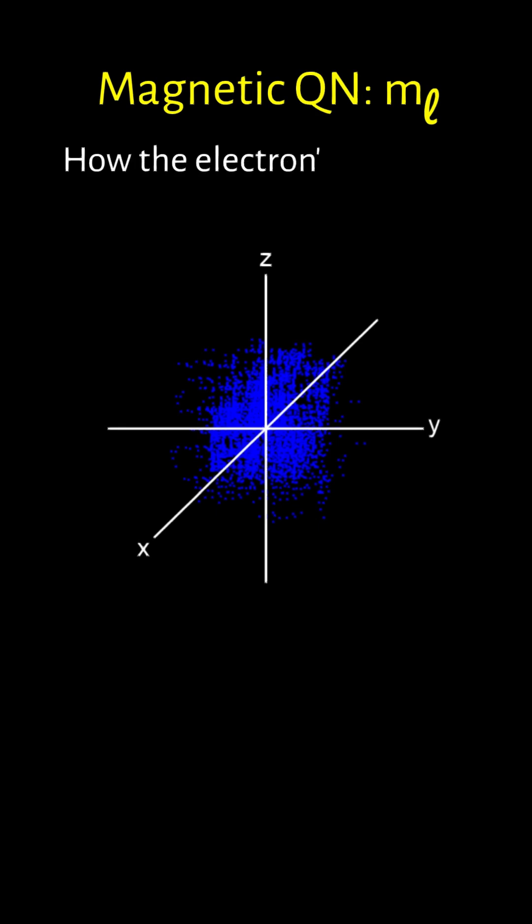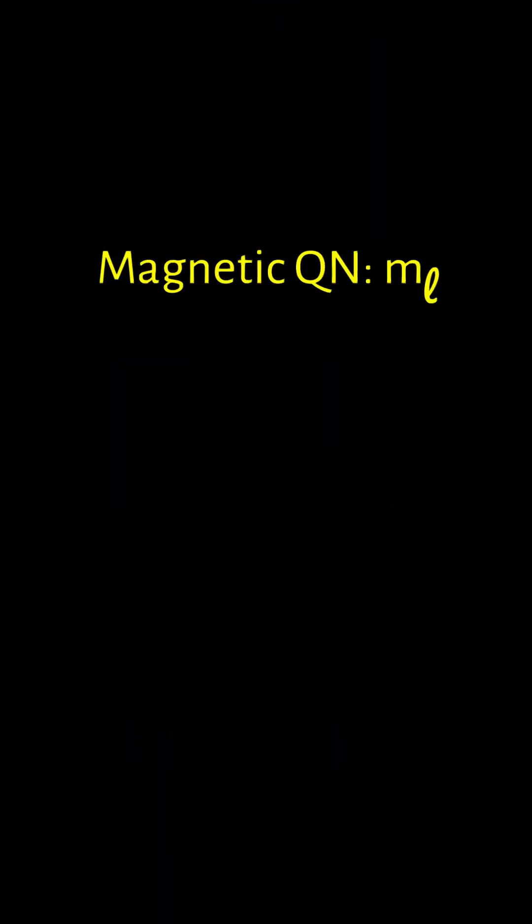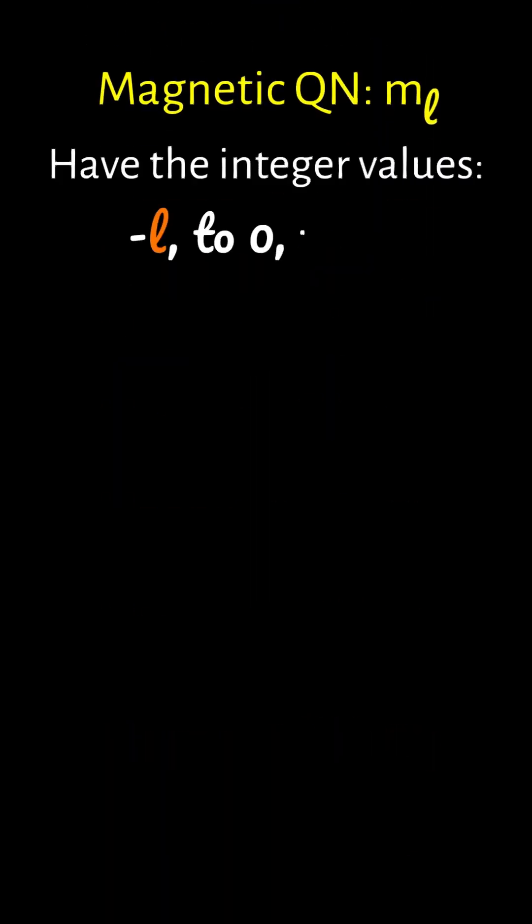The magnetic quantum number m sub l determines how the electron's orbital is tilted or oriented in space. Think of it as the orbital rotating in the zy axis. It can have the integer values of negative l to zero to positive l.